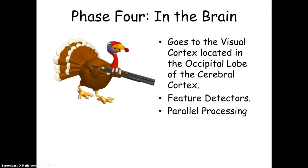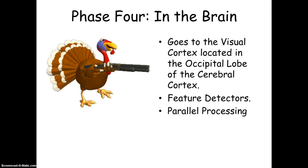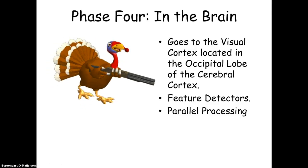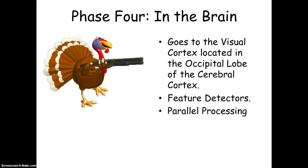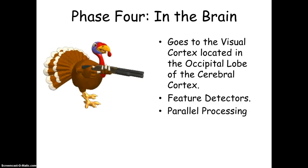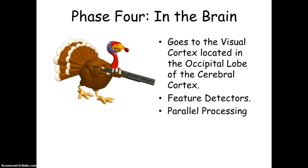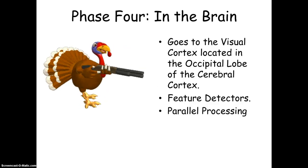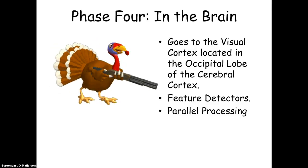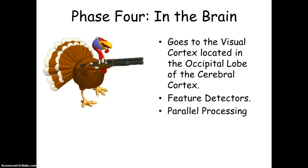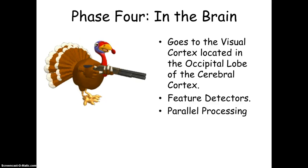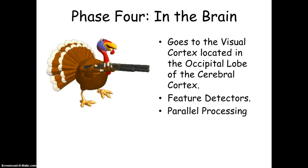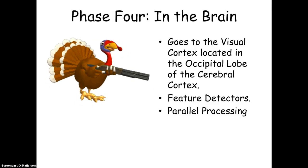These names are listed on the packet that I gave you with the key vocabulary in the front of it. This is the sensation and perception packet. I believe it's blue. You need to know these names. These guys won the Nobel Prize. And they are responsible for demonstrating that neurons in the occipital lobe's visual cortex receive information from individual ganglion cells in the retina. So they showed what I just described to you.